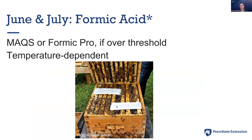Moving on in the season to June and July, my preferred soft chemical is formic acid. Formic acid is legally sold as two different products: Mite Away Quick Strips or Formic Pro. Both are a gel formulation of formic acid wrapped in paper, in gel packs. You place them on the top bars of the bottom brood chamber and close it up, and it vaporizes over the next two weeks. What I absolutely love about formic acid is that it is the treatment able to kill mites even under the cappings — it's killing mites on adult bees and mites in the brood. Apply it once, leave for two weeks, and you're done. Those gel pads are compostable.